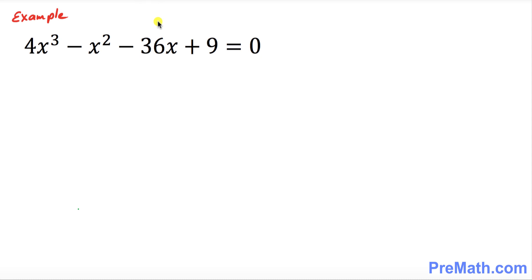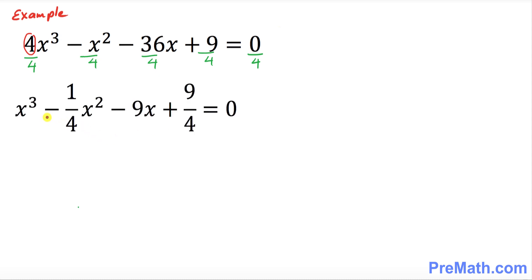Now let's move on to our next example. As you can see, our leading coefficient is 4. We want to make it 1, so we're going to divide by 4 across the board. Our new equation has a leading coefficient of 1.